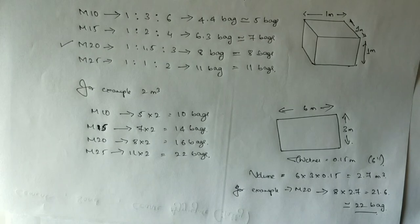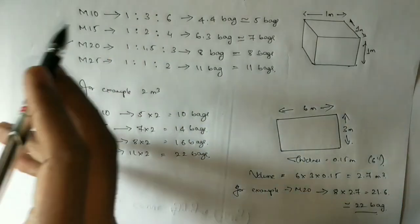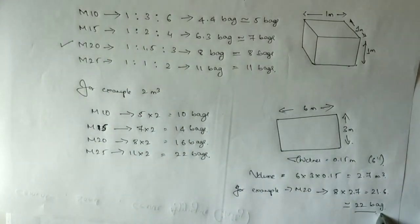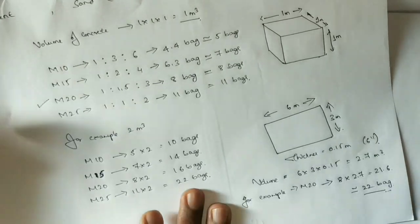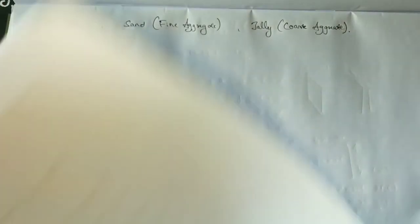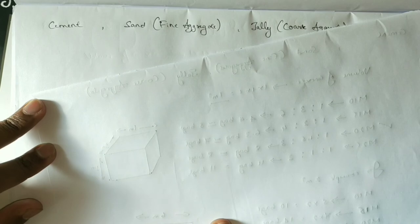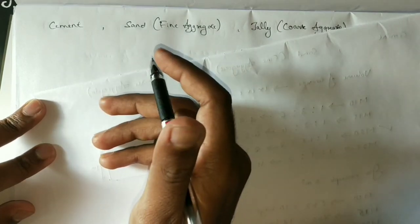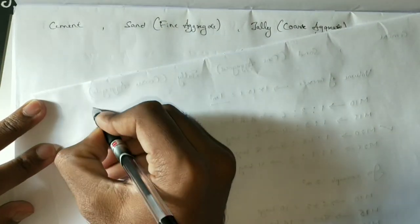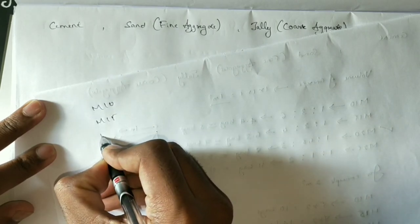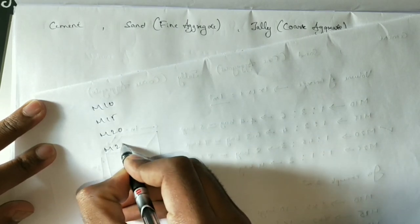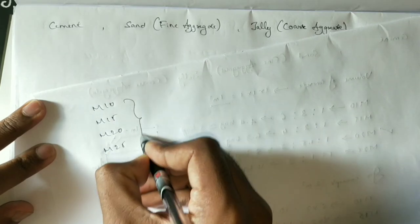Whether it's columns, beams, slabs, or footings, if you have the dimensions, you can calculate the volume in cubic meters, then multiply by the per-cubic-meter quantities.